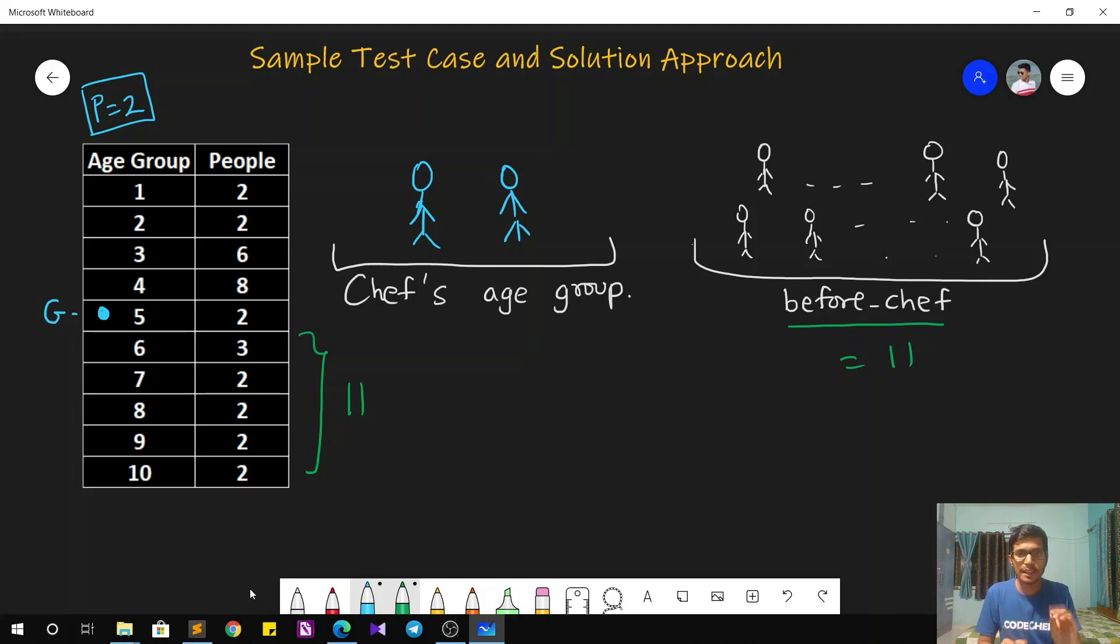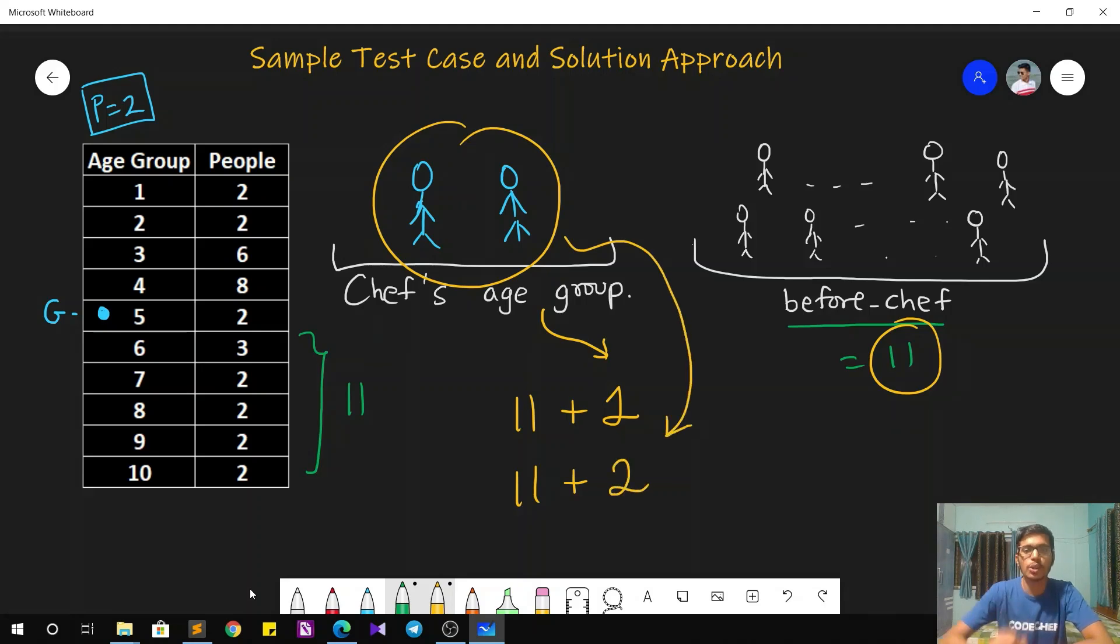But one thing is clear that these 11 people are going to get vaccinated first. So our answer depends whether in this 11, the first person to be added from chef's age group is chef itself or chef is the last person. In that case, all these people's count will be added in 11. So in that case 2.